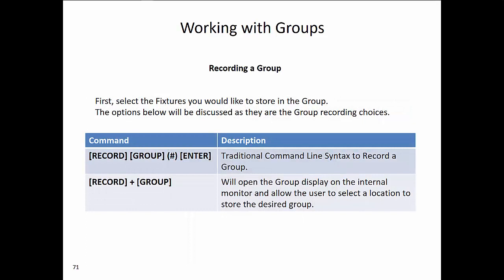To record a group, the first step is to select the fixtures that you would like to store in the group. Then for recording, you can use the traditional command line syntax by typing the keys: Record, Group, Number, Enter.